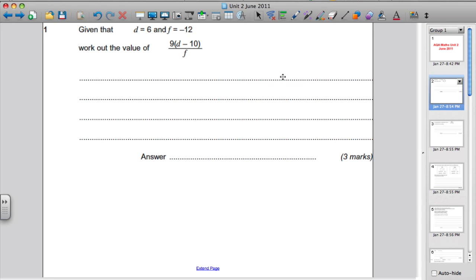Question 1. Given that D is 6, F is negative 12, work out the value of that expression. This is what's called a simple substitution question. All we've got to do is substitute in our D and our F, be very careful with our negatives, and work out the correct answer.